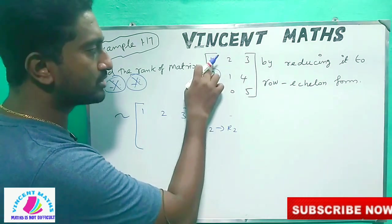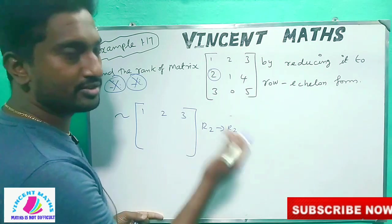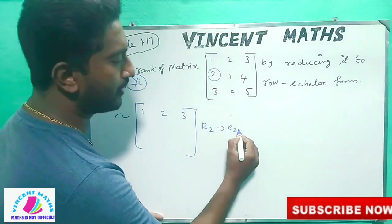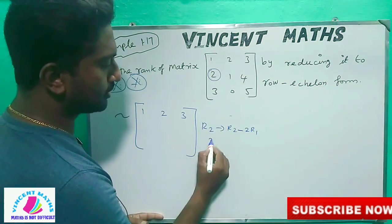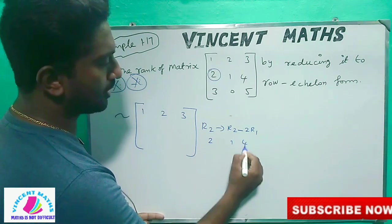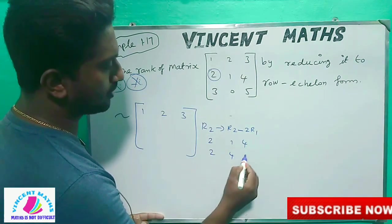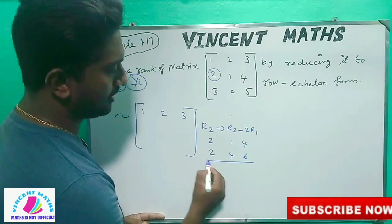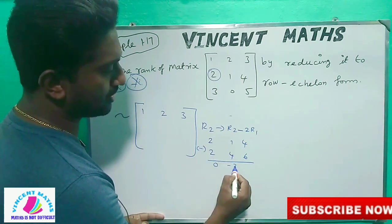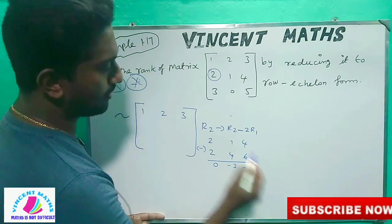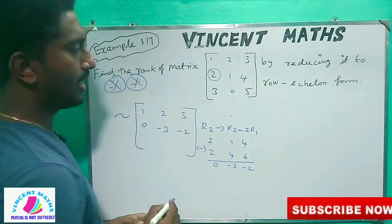Then minus 2 R1, then row 2 — how do you say: 2, 1, 4. Then row 1: row 2 gives 2, 4, 6. Then minus: this is 0, then minus this is minus 3, then minus this is minus 2. So we get 0, minus 3, minus 2.